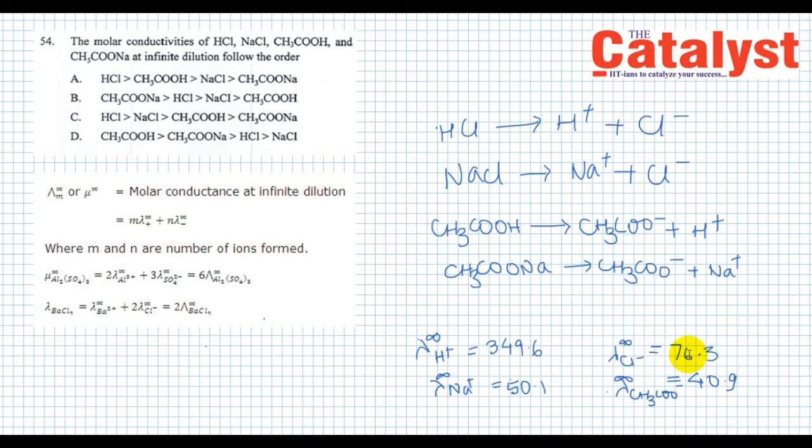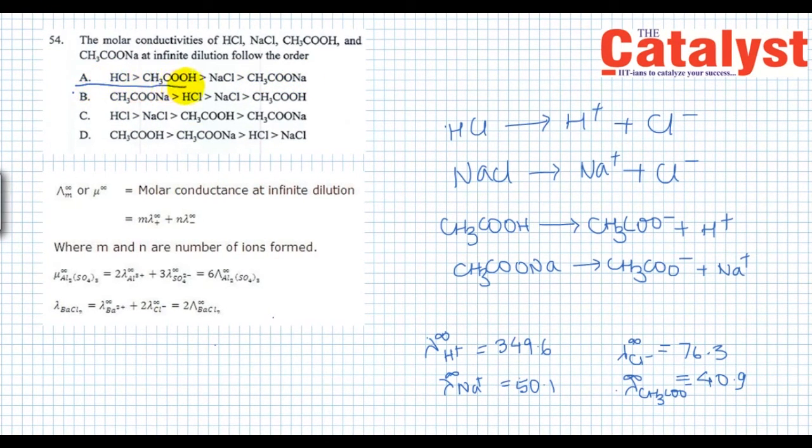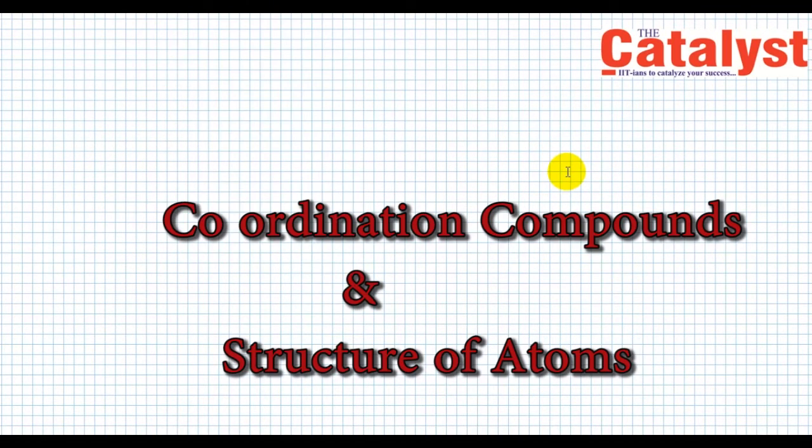Now combining these two, the highest value of molar conductance will be for H⁺ and Cl⁻ ion joining together, so first is HCl, then H⁺ and acetate ion (which is around 390), then sodium⁺ and Cl⁻ ion (that is NaCl), then sodium⁺ and acetate ion (which is sodium acetate). The option would be (A): HCl, then acetic acid, then NaCl, then sodium acetate.